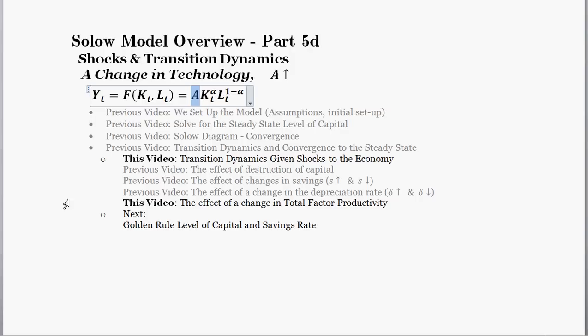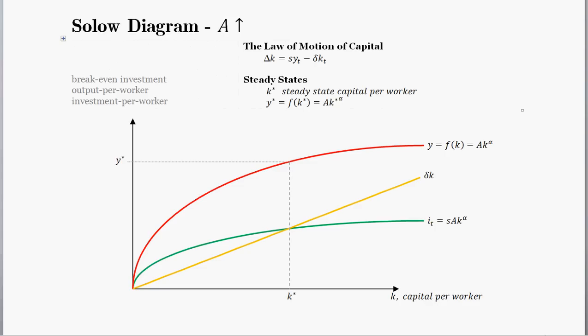What I plan to do is summarize the basic effects using the Solow diagram, and then we'll go through time series graphs to analyze the transition dynamics of the shift from one total factor productivity to another. So looking at the Solow diagram, what can we expect to happen?